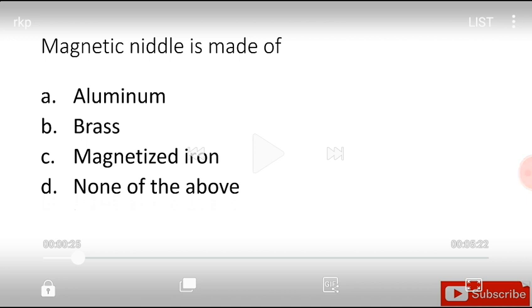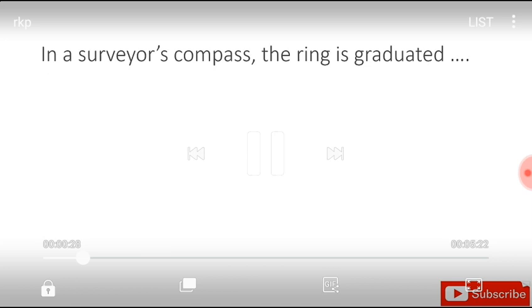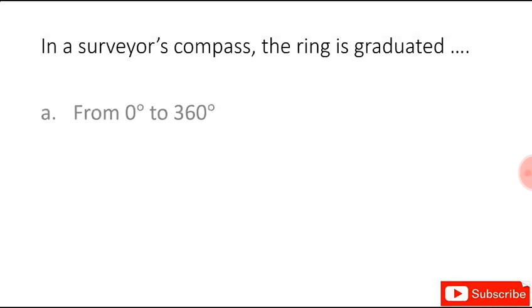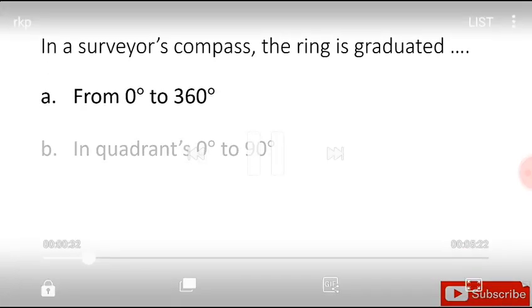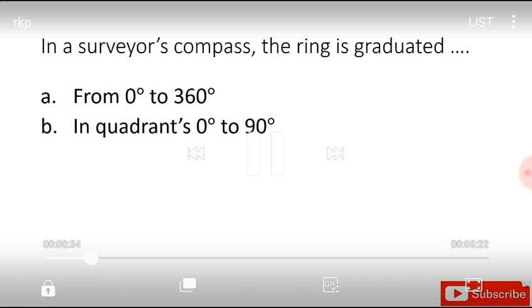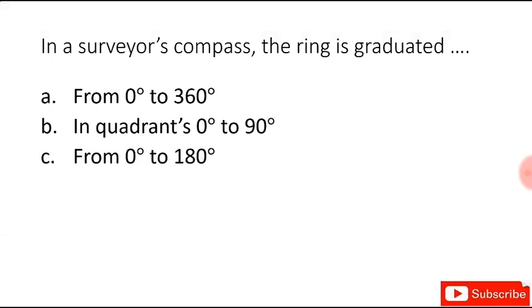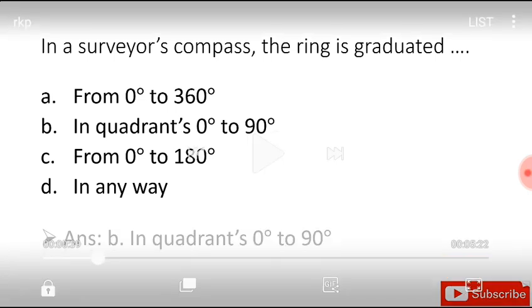In a surveyor's compass, the ring is graduated from 0 degree to 360 degree, in quadrants 0 degree to 90 degree, from 0 degree to 180 degree, or in any way. The answer is in quadrants 0 to 90 degree.